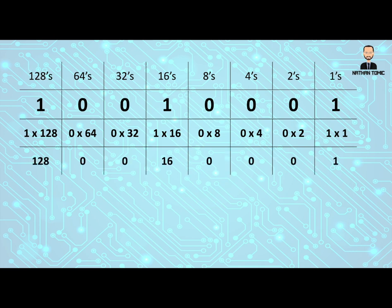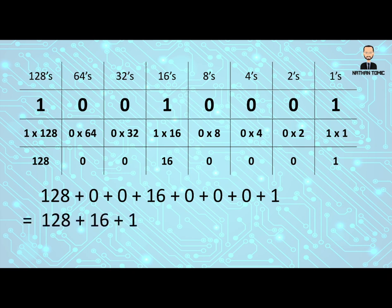So I take those down again. I've got 128. My next number I've got is a 16 and a 1. Add those together. I can simplify, of course, getting rid of the zeros and end up with 128 plus 16 plus 1, which gives me the overall value of 145.